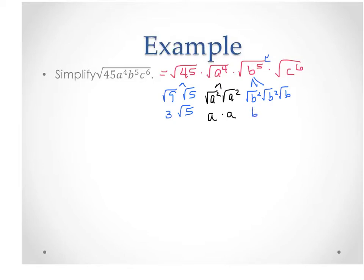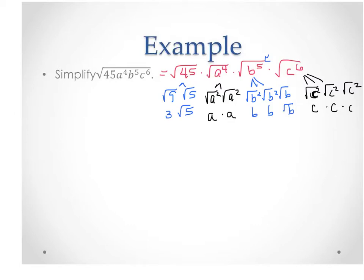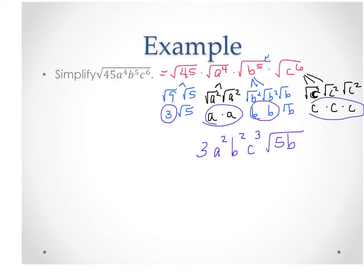So pulling everything together that is no longer under the square root out front, we have 3a²b²c³, and the remaining piece still under the square root is square root of 5b. The key idea is that if you can get something squared, then it cancels the square root — the square root of x squared is just x. This is how we simplify radical expressions with variables.